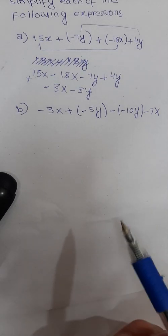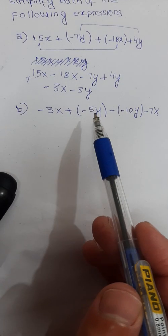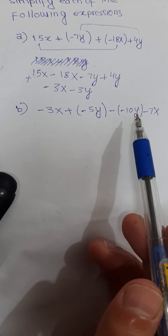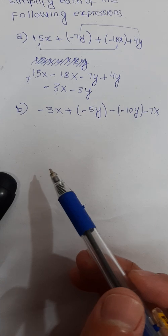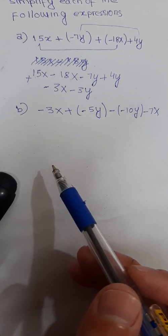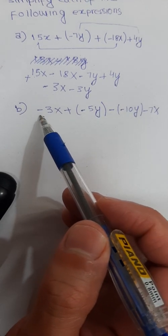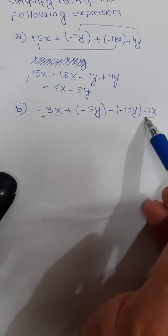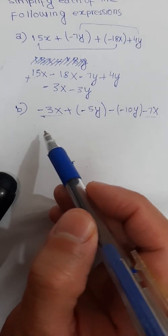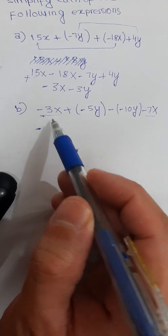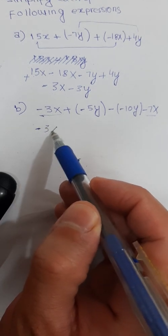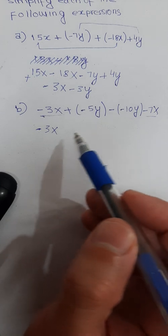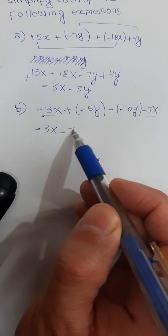Part b is minus 3x plus minus 5y minus bracket minus 10y minus 7x. Combine like terms: terms involving x are minus 3x and the last term minus 7x. Write them together: minus 3x minus 7x.